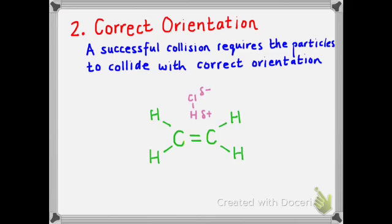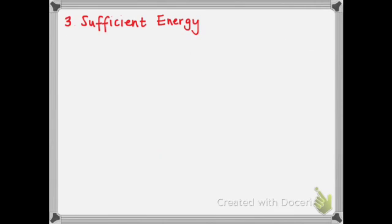If we consider the exact opposite — the HCl molecule orientated so that the slightly positive hydrogen end approaches the negative center of the double bond — there will be attraction between the slightly positive hydrogen and the negative electron density. That will result in a successful collision, as long as it has sufficient energy for the reaction to take place. That's the issue of correct orientation as shown in that particular example.